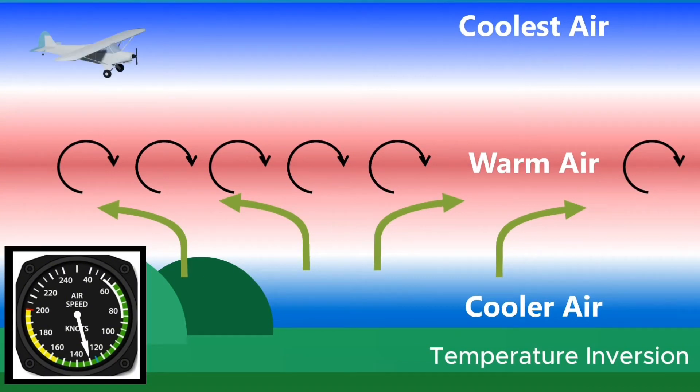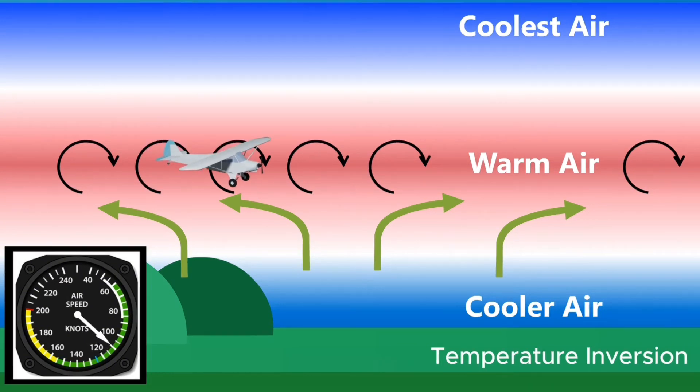A sudden change of indicated airspeed is a sign that you are experiencing wind shear. This is because the airspeed indicator calculates airspeed using static and pitot pressure which are affected by the sudden change in wind direction and speed. A pilot can expect wind shear in a temperature inversion whenever the wind speed at 2,000 to 4,000 feet above the surface is at least 25 knots.